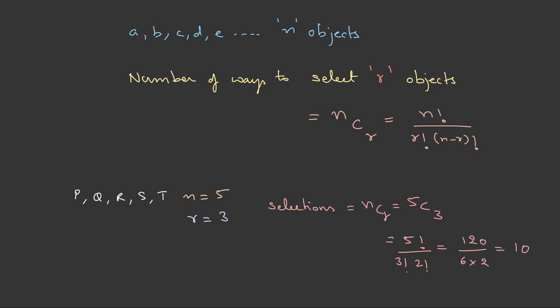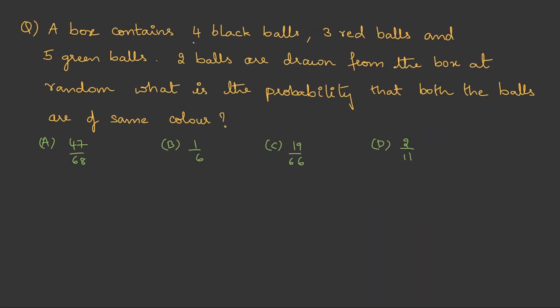That is how we calculate the number of selections from a set of objects. Now this concept is required to solve the probability questions. Now to understand that, let's take one question. A box contains 4 black balls, 3 red balls and 5 green balls. 2 balls are drawn from the box at random. What is the probability that both the balls are of same color?